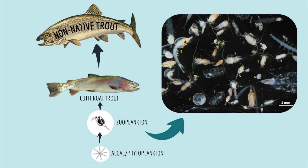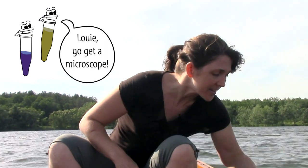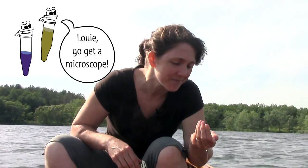Cutthroat trout eat zooplankton, which are tiny animals that live in the lake water and eat algae. By the way, if you ever get the chance to check out lake water under the microscope, do it — it's amazing the tiny things that live in lake water.